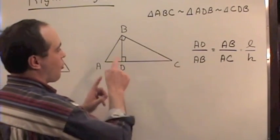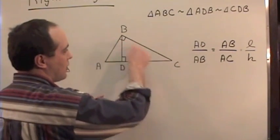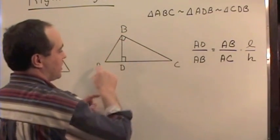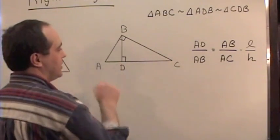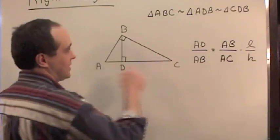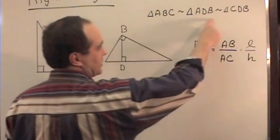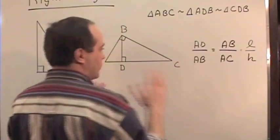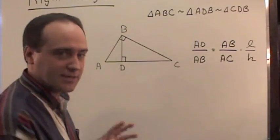Now this forms two other triangles which are also right triangles. So you've got triangle ABC, triangle ABD, and triangle DBC. And all of these triangles here, I've got them drawn in the correct order so the corresponding sides correspond.